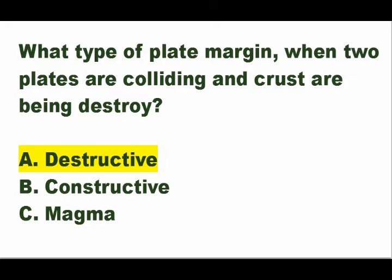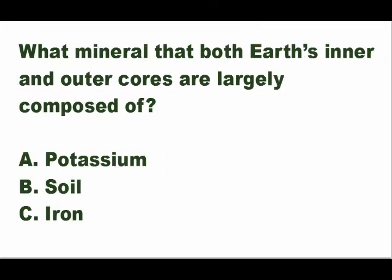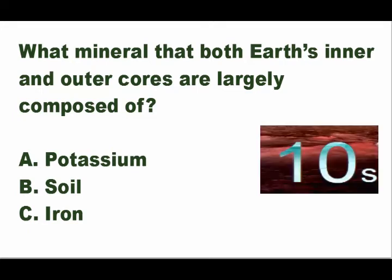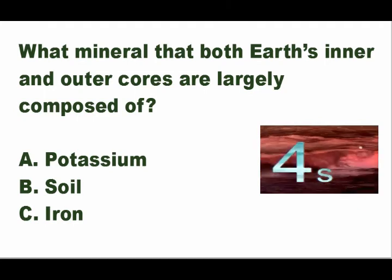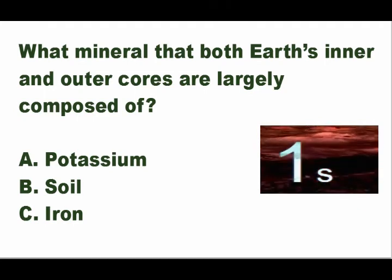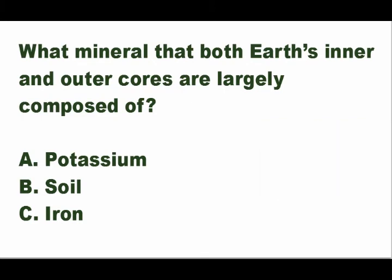Next question: what mineral are both Earth's inner and outer cores largely composed of? Is it A — potassium, B — soil, or C — iron? The answer is letter C — iron. Both Earth's inner and outer cores are largely composed of iron.